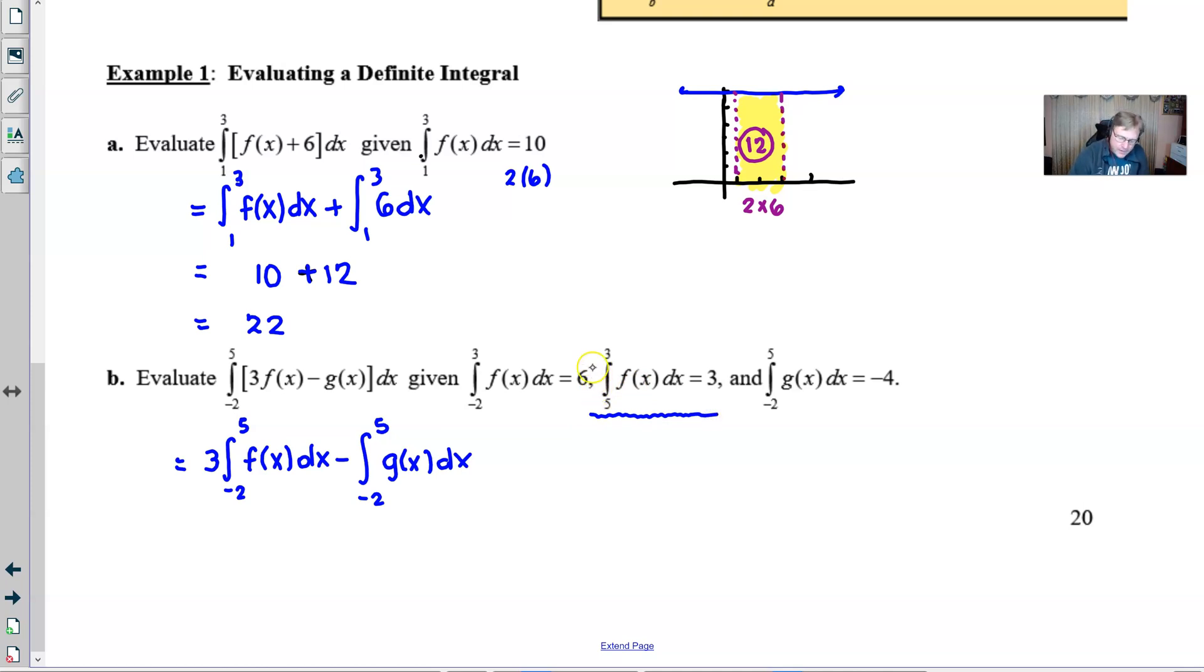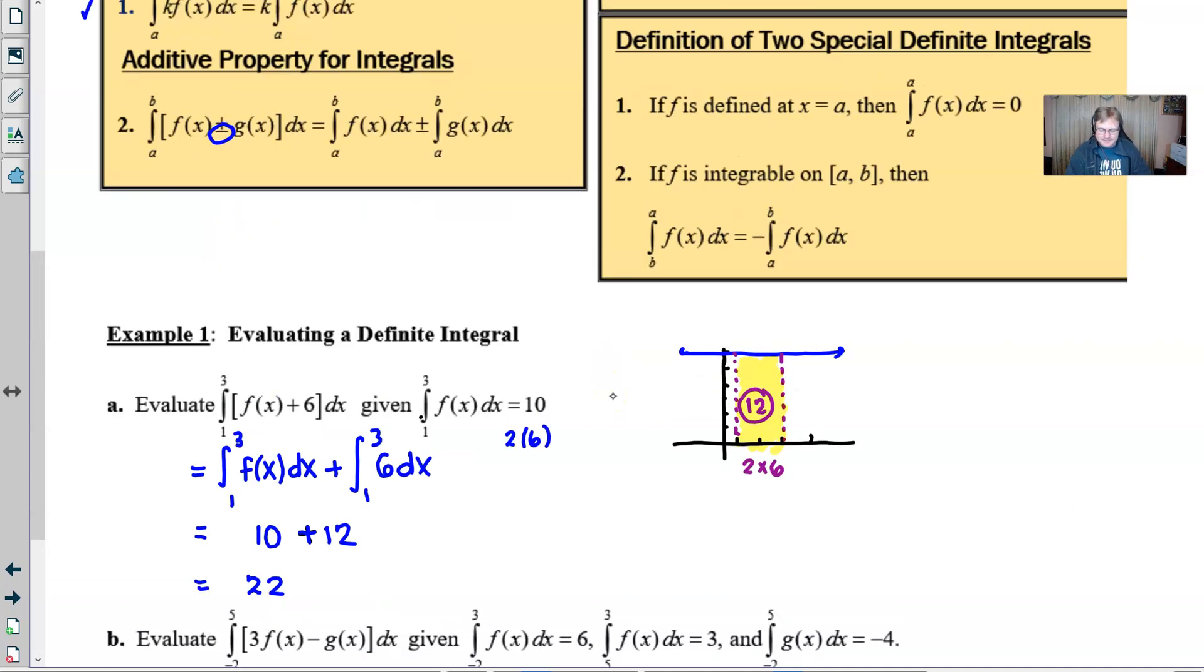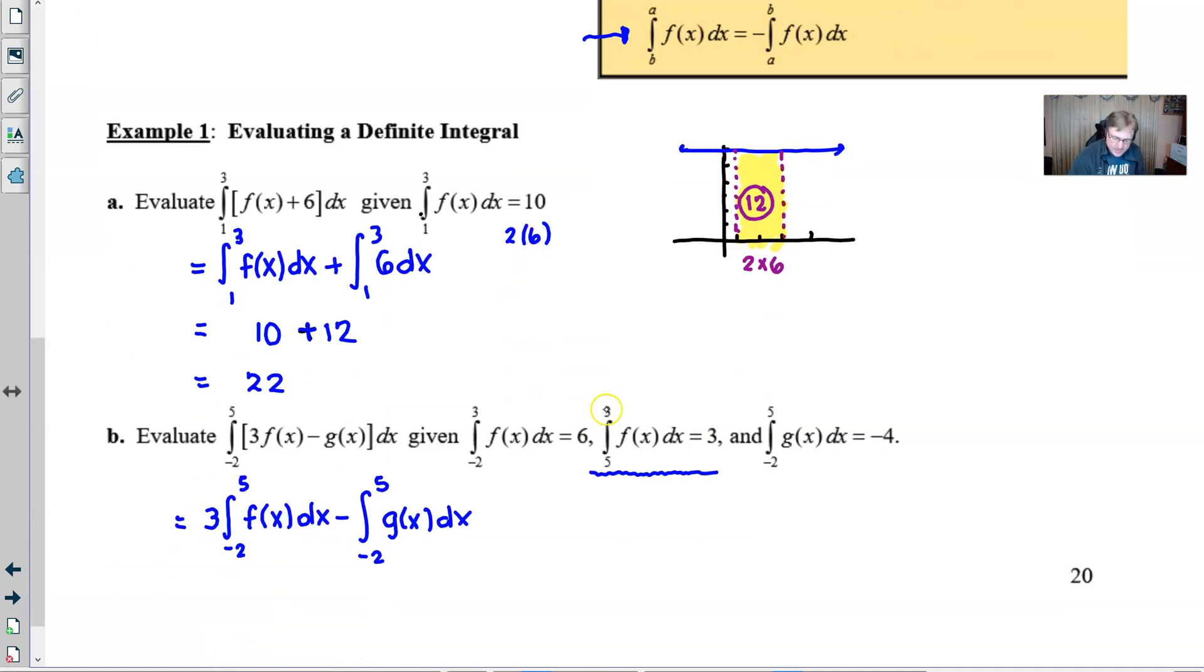We really want to resume this first integral where we left off at the upper bound of three. But you can see that the three is placed in the upper bound here. But if you look at this special definite integral property, we can use that to flip the three and the five of that same function and know that it's going to result in the opposite answer in this case, negative three. And that's where it comes into play.